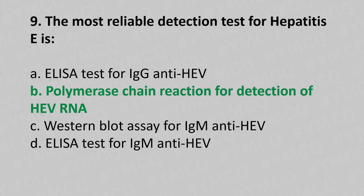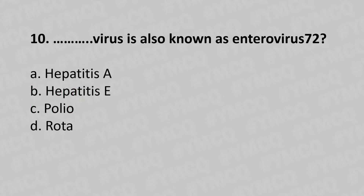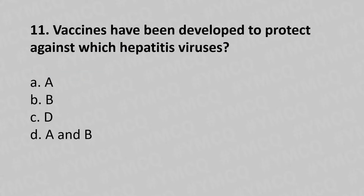Now let's move to question number 10. This virus is known as enterovirus 72. Option A, hepatitis A. Option B, hepatitis E. Option C, polio. Option D, rota. And the answer is... Option A, hepatitis A.